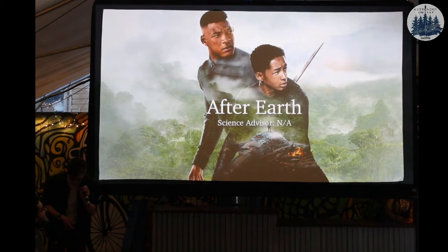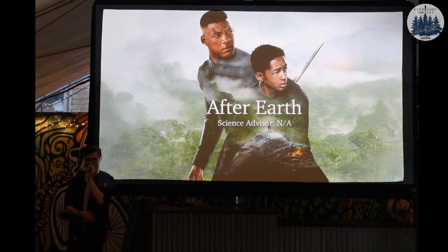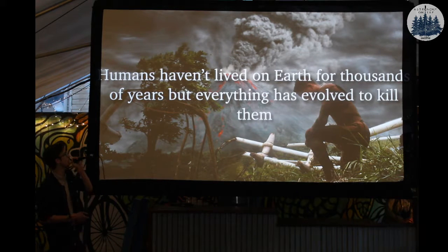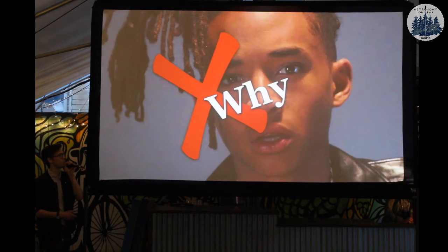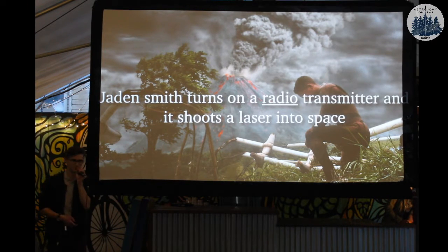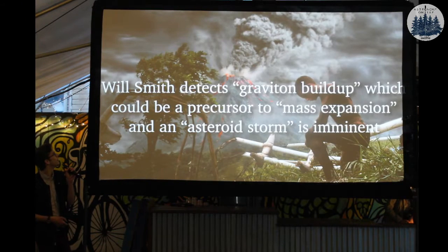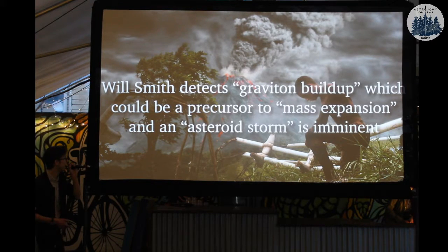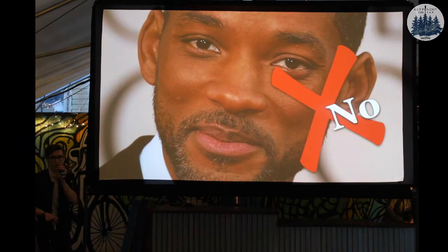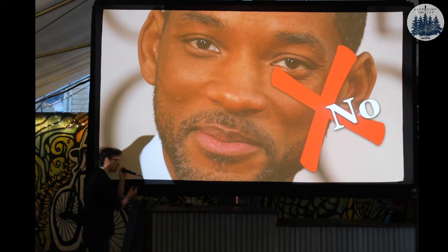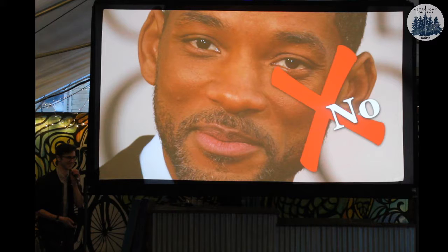Here's a movie I could talk about for a very long time — After Earth. A few quick points: humans haven't lived on Earth in this film for thousands of years, but everything has apparently evolved to kill them — why? Jaden Smith turns on a radio transmitter and it shoots a laser into space. Will Smith detects 'Graviton buildup,' which he says could be a precursor to 'mass expansion,' and an asteroid storm is imminent. I don't know what any of that means. The way he detects it — he takes off his wedding ring, holds it to the hull of the ship, and says 'we've got Graviton buildup.' I'm serious.